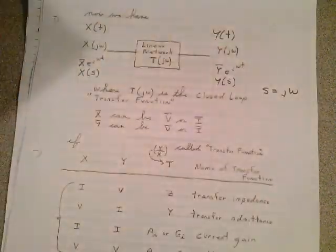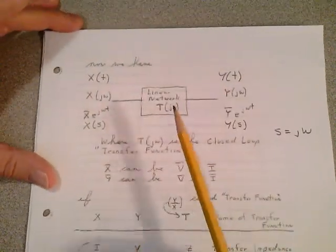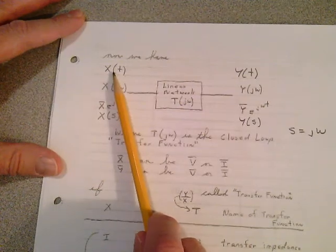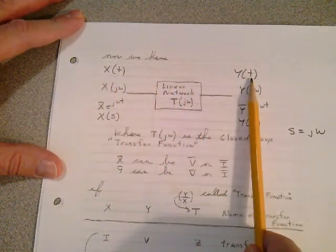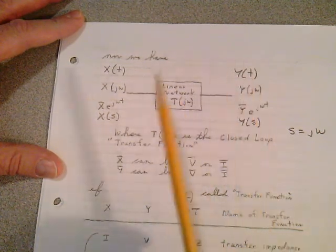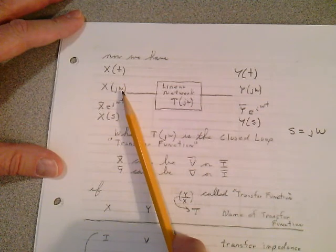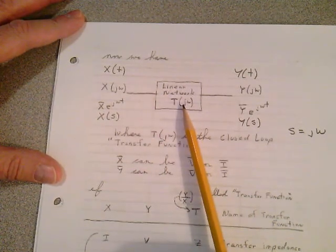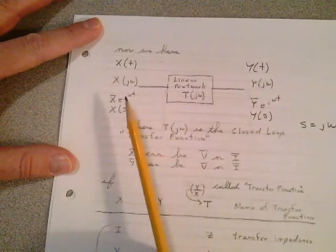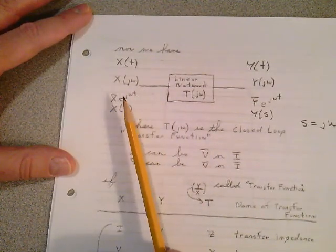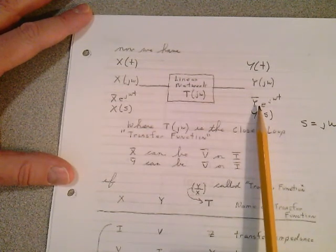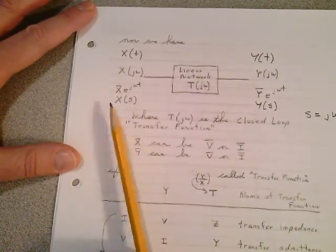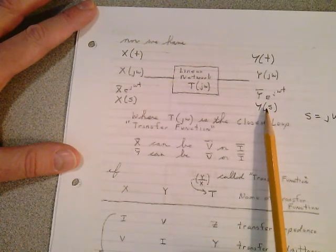Now what we have is a linear network made up of resistors, capacitors, and inductors. We already said that the input could be a function of time, and you get the output as a function of time, but it's sort of messy to work with the time equations. We moved into the frequency domain where the input was a function of jω, the output was a function of jω, and the transfer function being the ratio would be a function of jω. Now we're going to let s equal jω and have x of s as the input — either voltage or current — and we'll end up with the output response in terms of s.